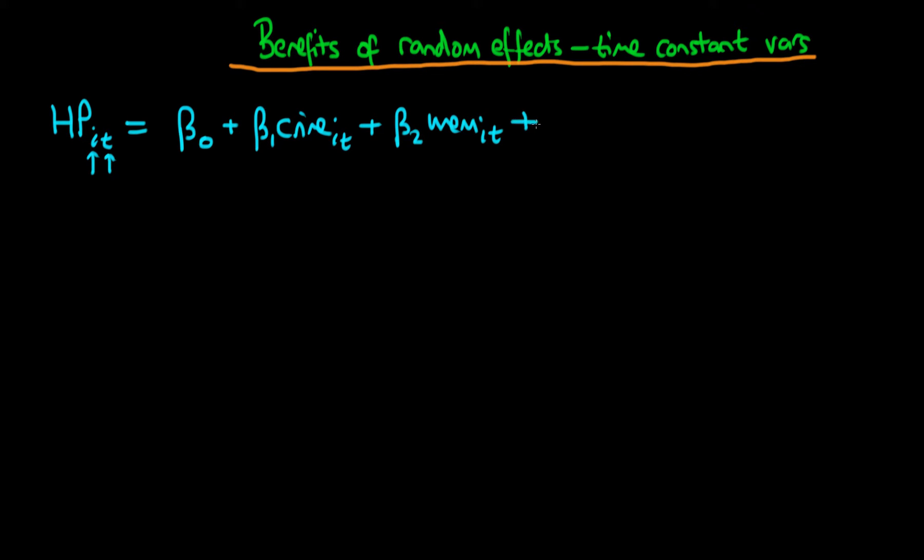But now what we do with this particular random effects estimation is that we can include our measures of variables which are themselves constant through time. So I'm including a variable geography which doesn't really vary through time for each individual city, so there's no time subscript on this particular term here.